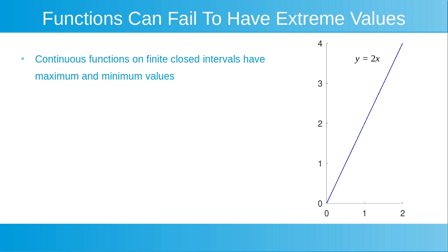Shown to the right is a plot of the continuous function y is equal to 2x, on the closed interval from x is equal to 0 to x is equal to 2. This closed interval includes all points between x is equal to 0 and x is equal to 2, as well as the endpoints. This continuous function on this closed interval has an absolute maximum value of 4 at the point where x is equal to 2, and an absolute minimum value of 0 at the point where x is equal to 0.